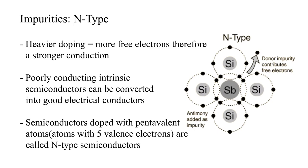A heavier doping level produces stronger conduction, thus a poorly conducting intrinsic semiconductor can be converted into a good electrical conductor. Semiconductors doped with pentavalent atoms, atoms with five electrons in their outer shell, are called n-type semiconductors because there is an excess of negative electrons.